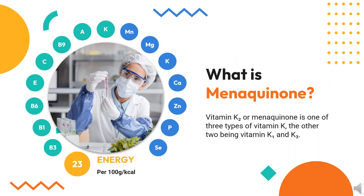What is Menoquinone? Vitamin K2, or Menoquinone, is one of three types of vitamin K, the other two being vitamin K1 and K3. K2 is both a tissue and bacterial product and is usually found in animal products or fermented foods.